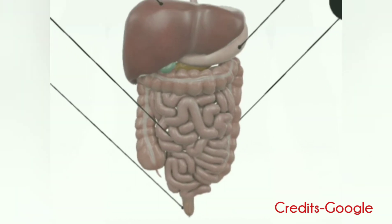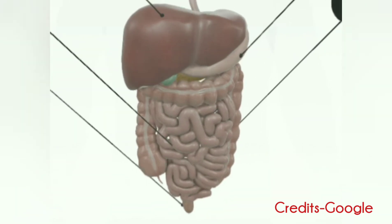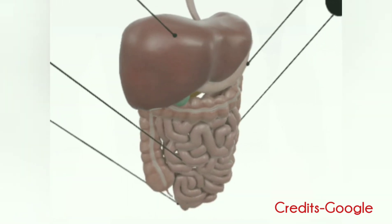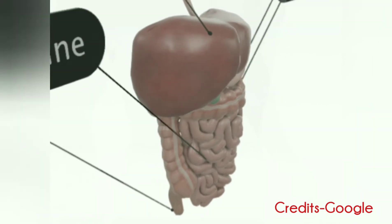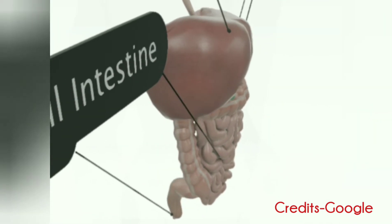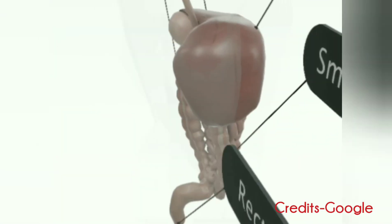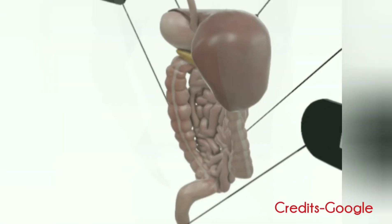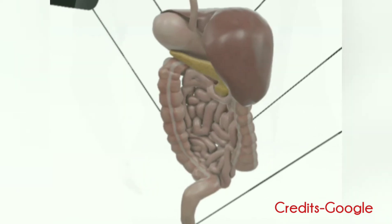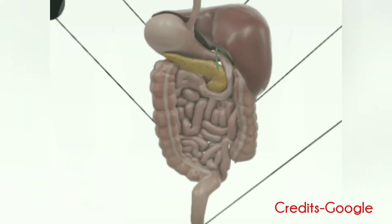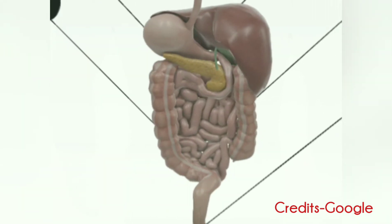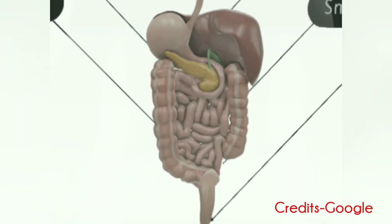The largest structure of the digestive system is the gastrointestinal tract, or the GI tract. This starts at the mouth and ends at the anus, covering a distance of about 9 meters.